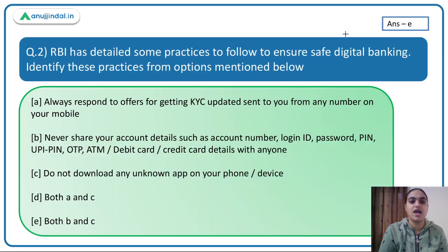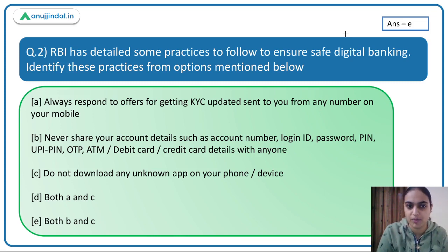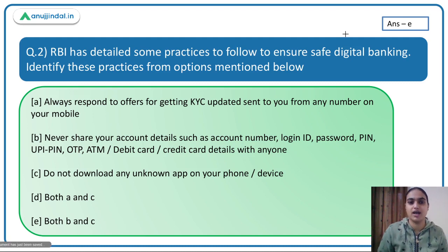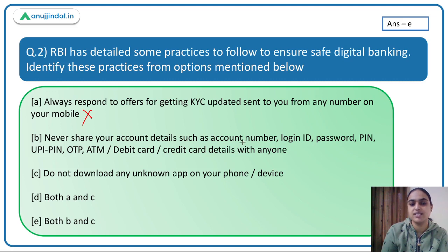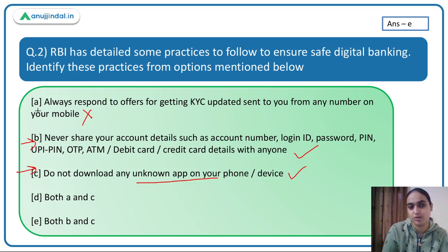The second question asks: which of these are safe digital banking practices as per RBI? Option A — always respond to KYC update offers from any number — is incorrect. Option B — never share account details like account number, ID, password, or OTP — is correct. Option C — do not download unknown apps — is correct. So the answer is Option E (B and C both).